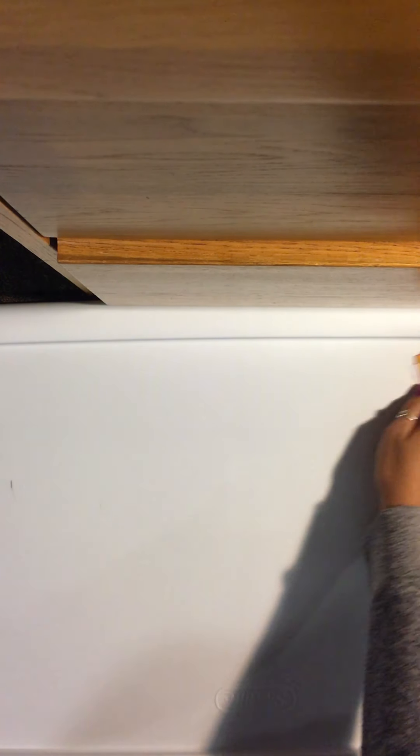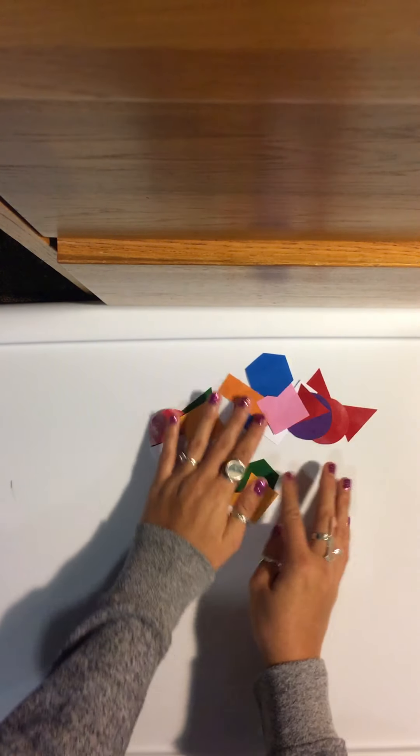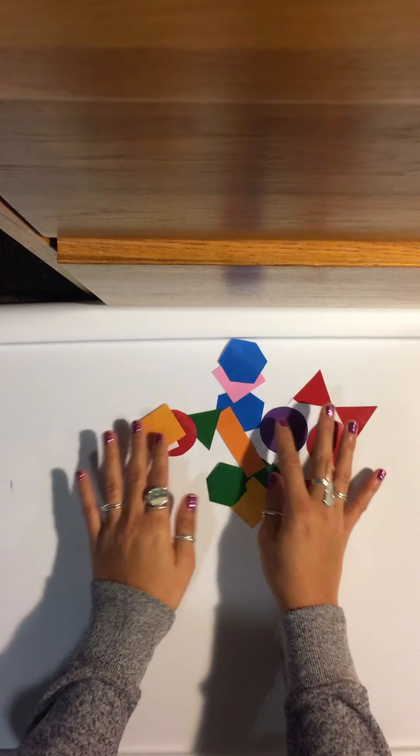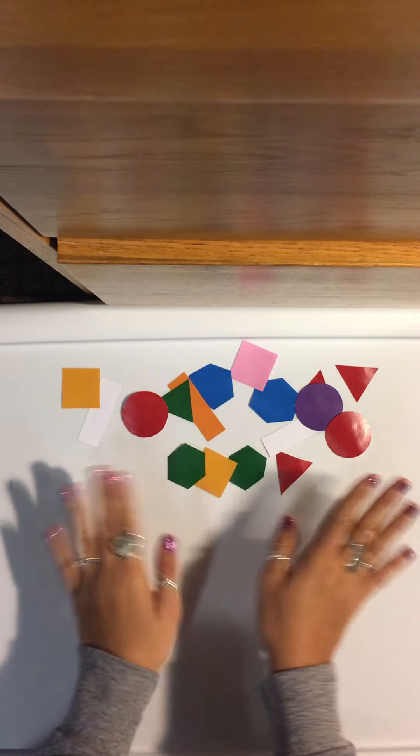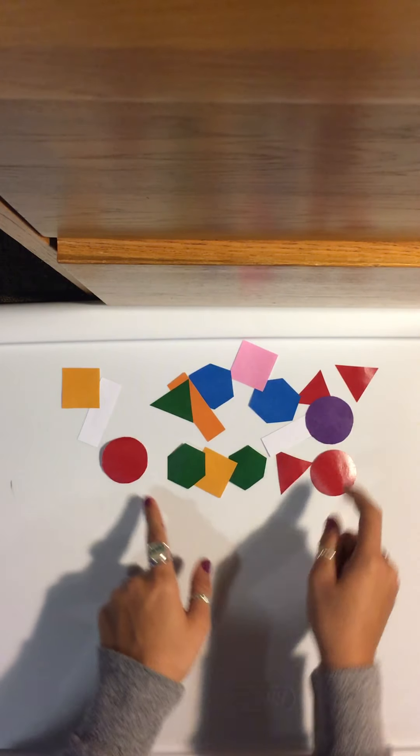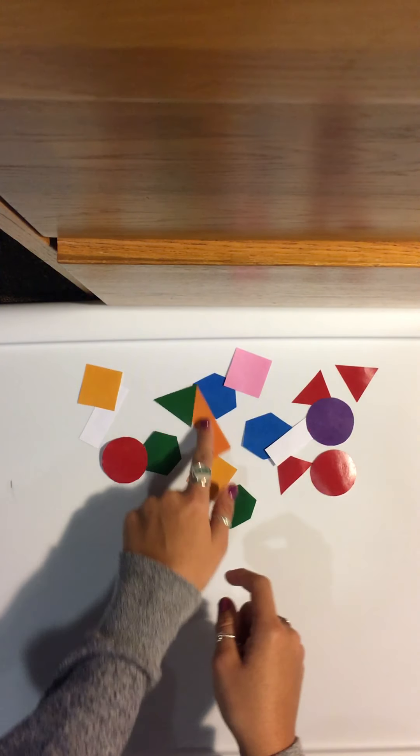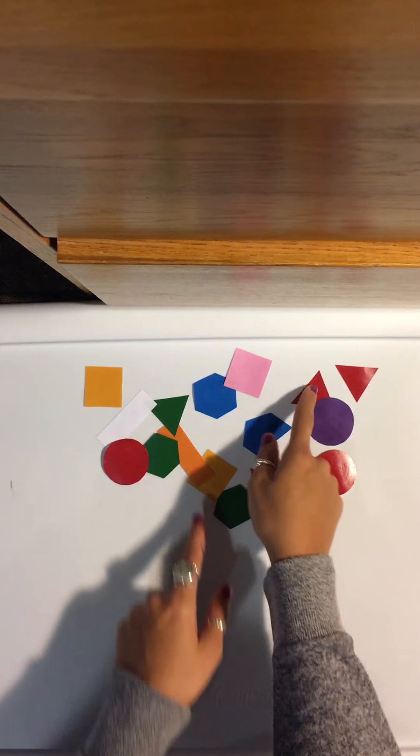And so basically how you're going to start is you're going to grab all your toppings. You'll have even more than this, but for example, we're just going to pull out a few toppings. And yes, your toppings are all different shapes. We have circles, we have hexagons, we have squares, rectangles, and even triangles.